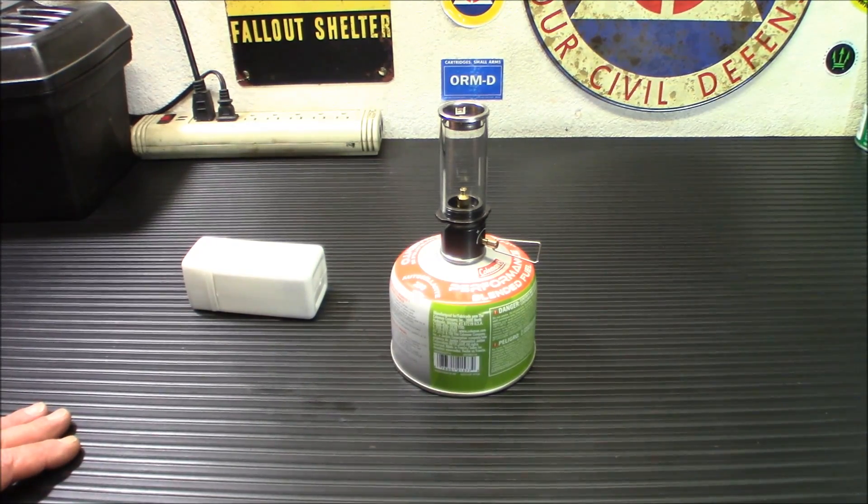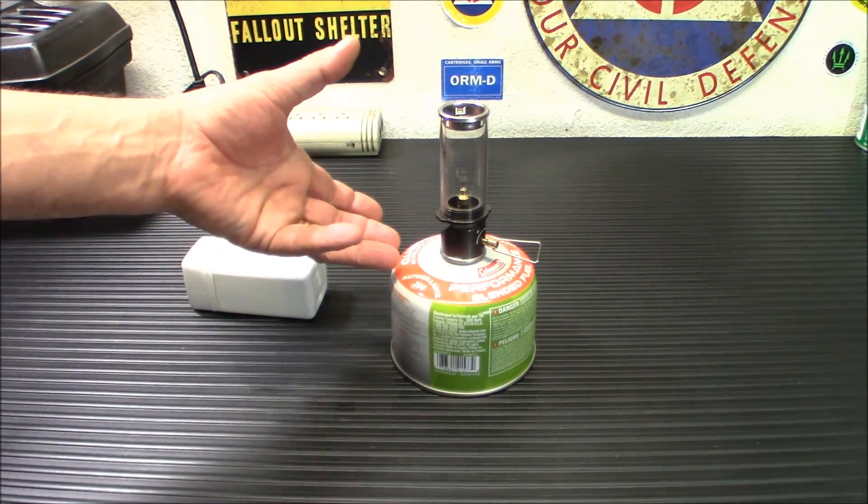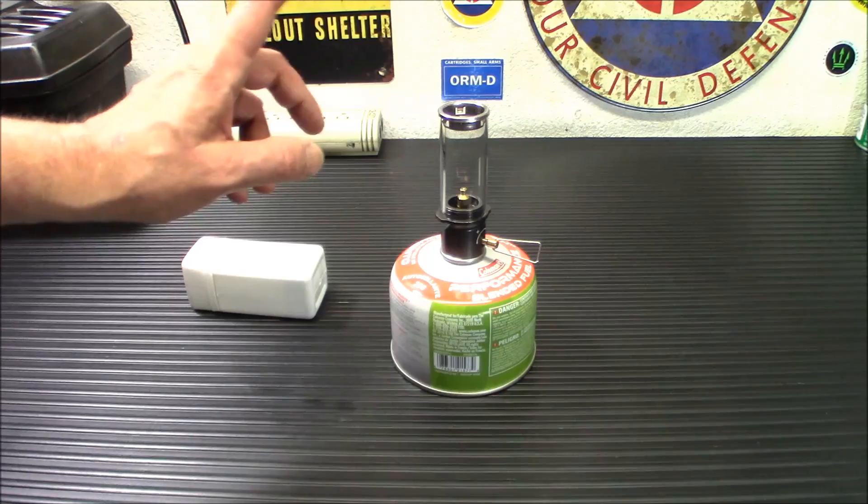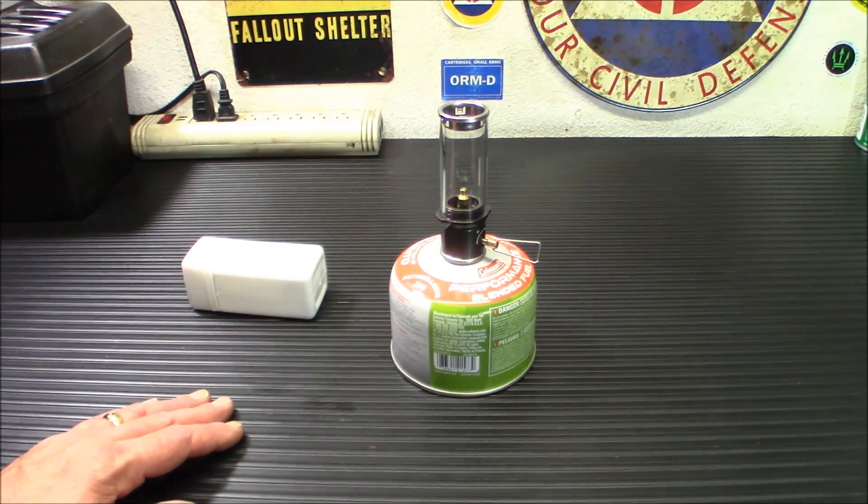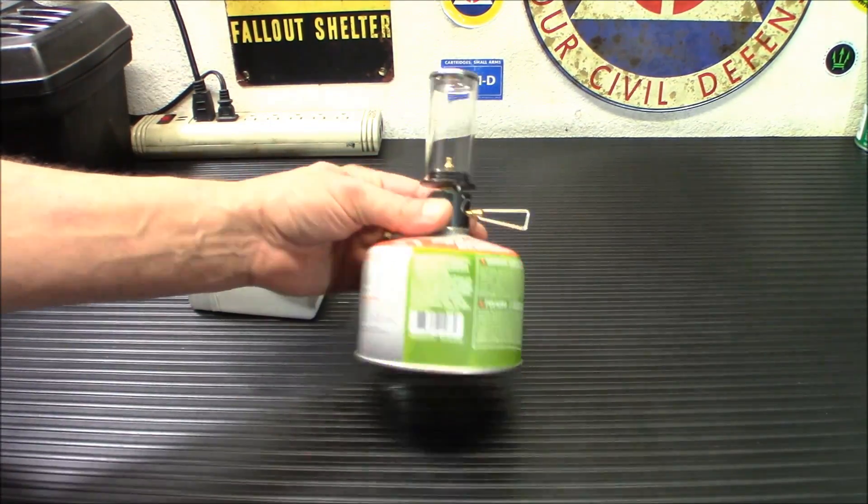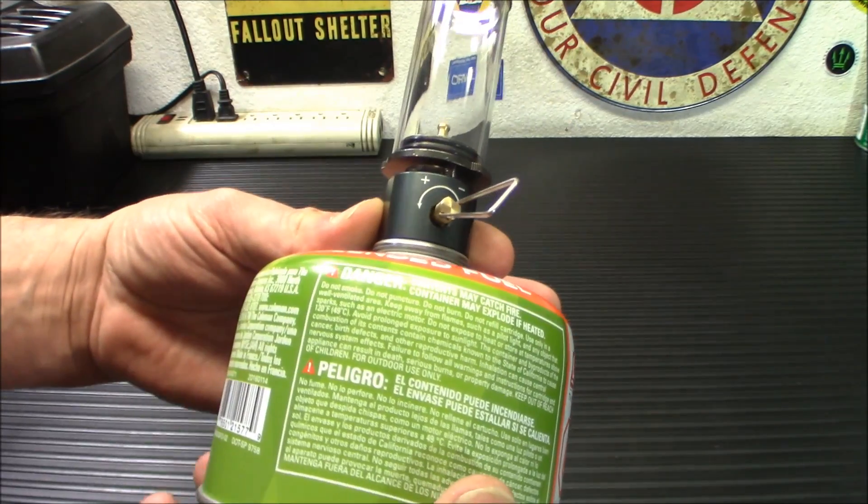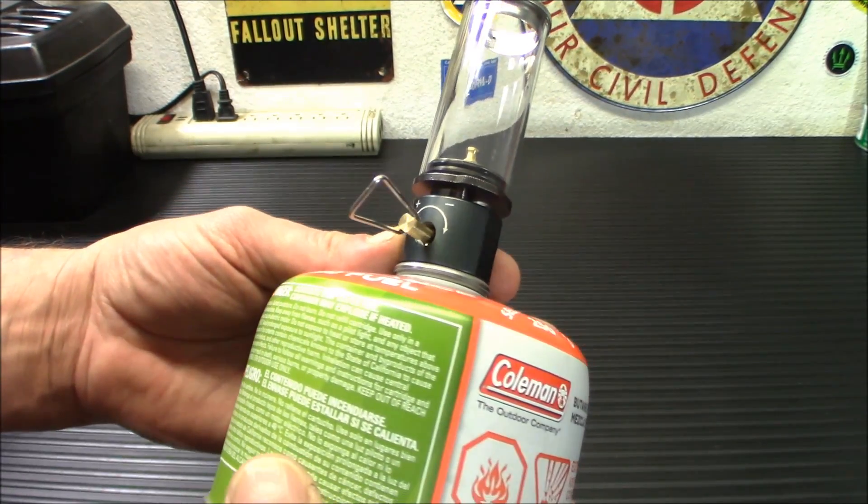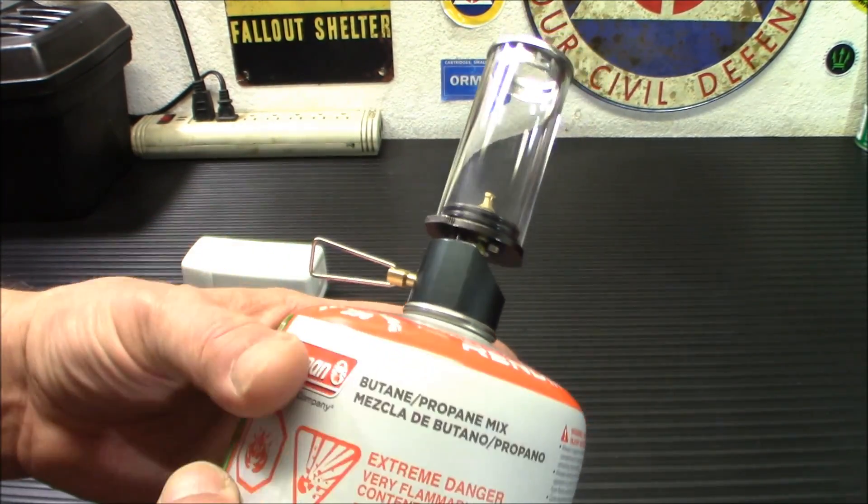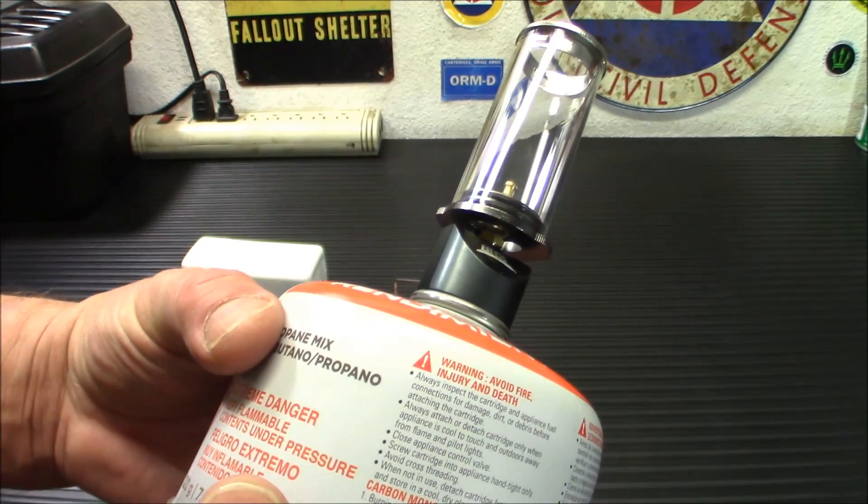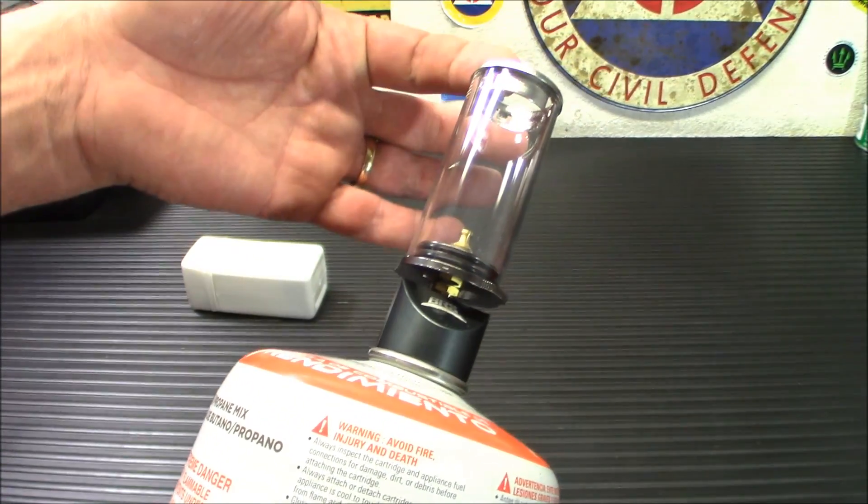So let's get into some specs first of all. It's 1.5 by 1.3 by 3.9 inches. The lamp weight is 3.4 ounces. So it's not super heavy. It's made of very lightweight materials. I'll give you a close up here on it. So you can kind of take a look.